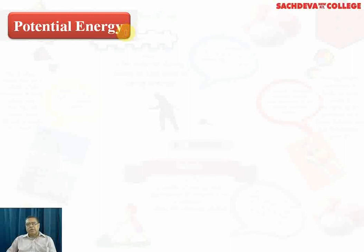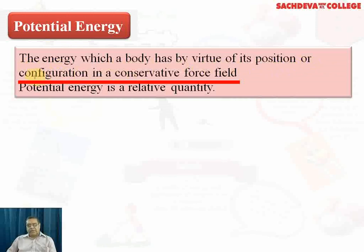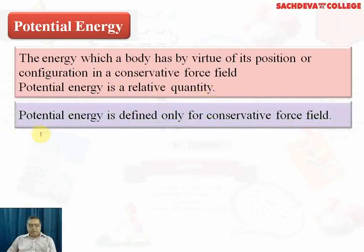Weight is a force, so force multiplied by height gives the gravitational potential energy. The energy which a body has by virtue of its position or configuration in a conservative force field is called potential energy. Potential energy is defined only for a conservative force field.